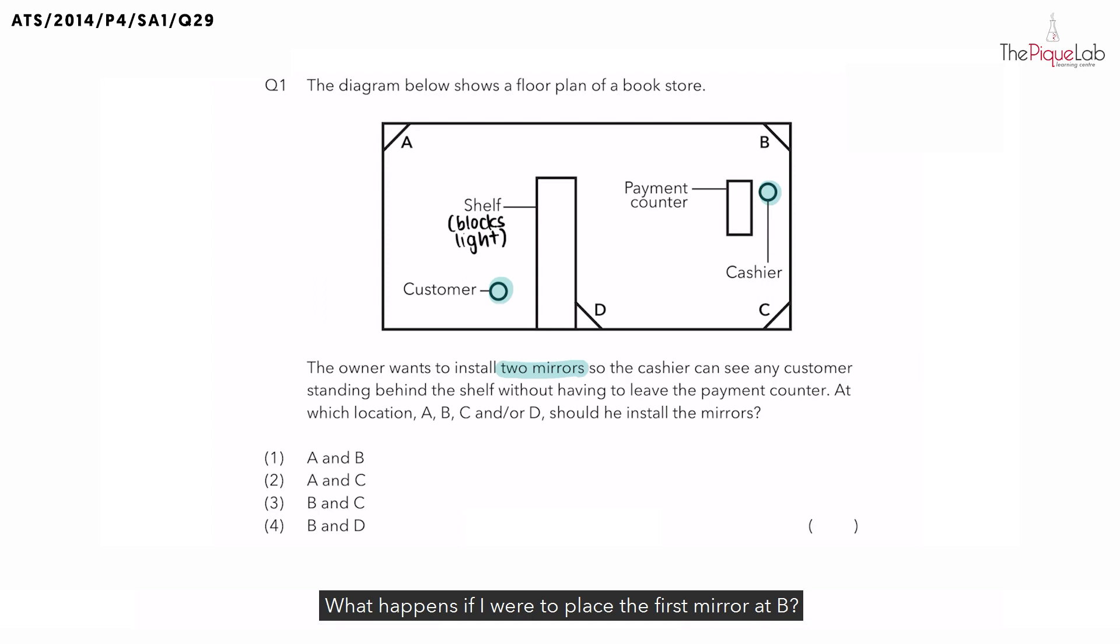What happens if I were to place the first mirror at B? Light reflected off the customer needs to be able to pass through the shelf in order to reach mirror B. Now in that case, is that possible? As established earlier, we have already said that the shelf blocks light. So the first mirror cannot be at B and it also cannot be at C or D because of the same reason—the shelf is blocking light.